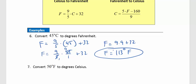Question 7: Convert 50 degrees Fahrenheit to Celsius. Using the formula C = 5(F − 160)/9, substitute 50: C = 5(50) − 160, all over 9. Following order of operations: 5 times 50 is 250; 250 minus 160 is 90; 90 divided by 9 is 10 degrees Celsius.